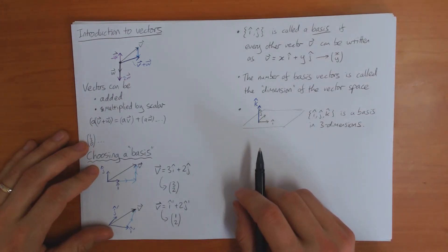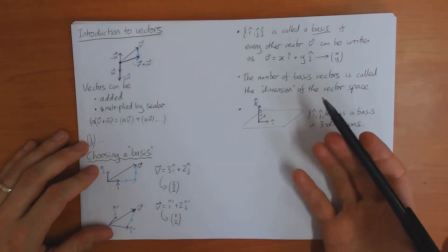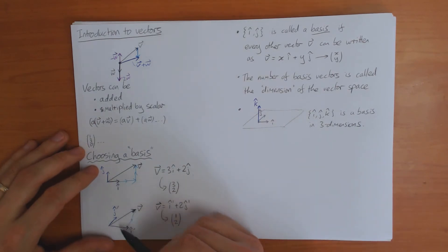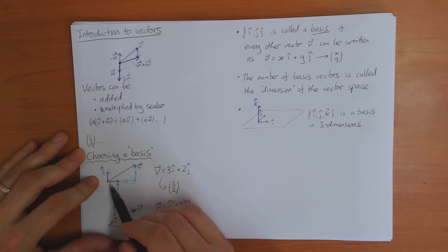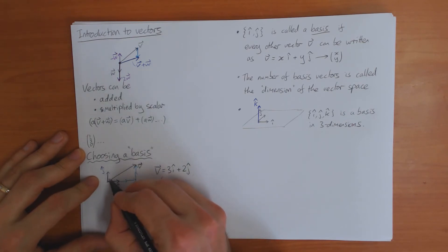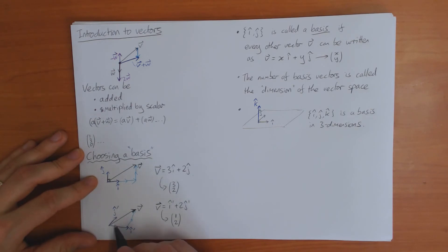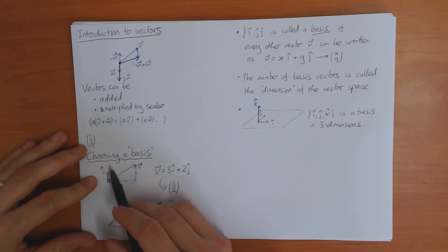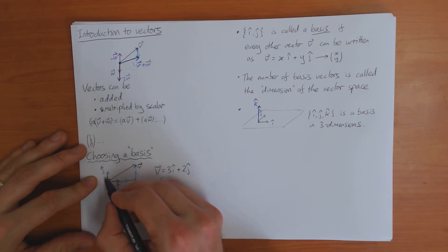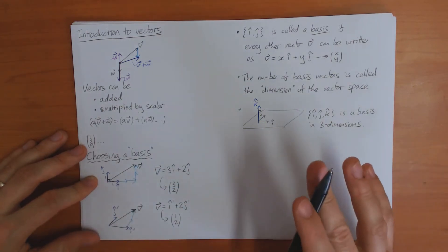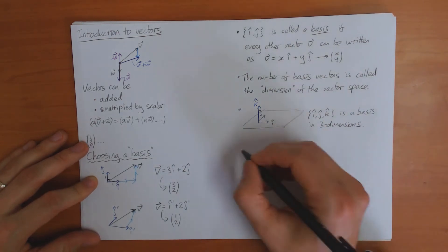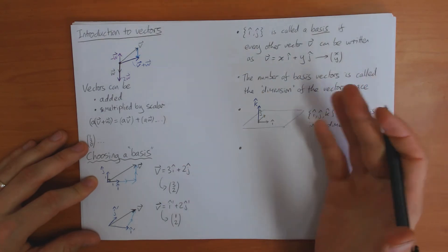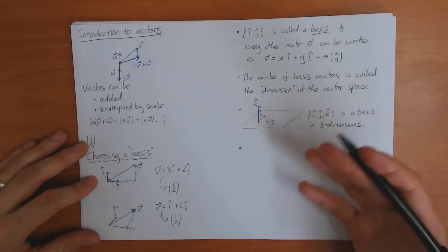Some basis choices are better than others. Looking at these two examples, the original basis i and j has special properties: the lengths of i and j are the same, and the angle between them is 90 degrees. This is not true of the basis i-prime, j-prime, where the lengths are different and the angle is not 90 degrees. If your basis has all angles of 90 degrees between vectors and all basis vectors have length one, then the basis has a special name: it's called orthonormal. In physics and other sciences, we tend to use orthonormal bases whenever possible.